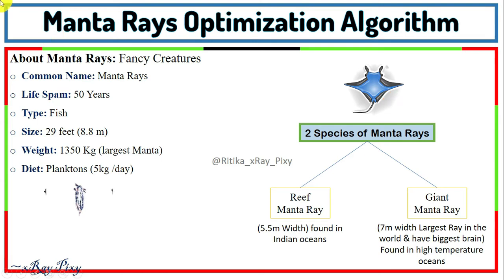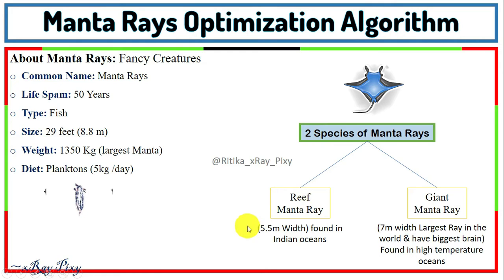Manta rays are fancy creatures that come in the category of fish. Their lifespan is about 50 years, size about 29 feet, weight about 1350 kg for the largest Manta ray, and their diet consists of plankton — an adult Manta ray can eat 5 kg of plankton per day. There are two species: the Reef Manta Ray (width about 5.5 meters) and the Giant Manta Ray (width about 7 meters). Giant Manta rays are found in tropical and subtropical high-temperature oceans, while Reef Manta rays are found in Indian oceans. They have the largest brain among all fish.